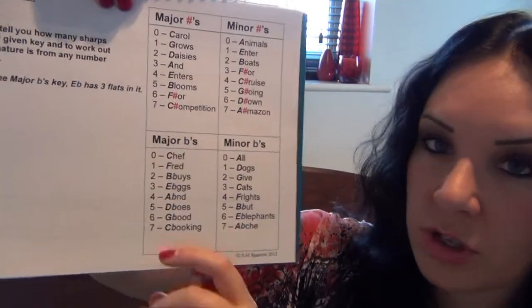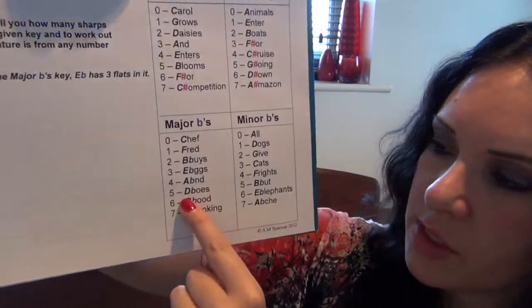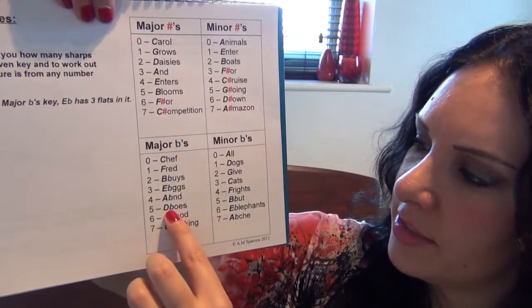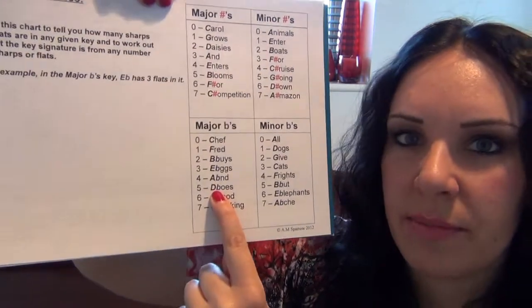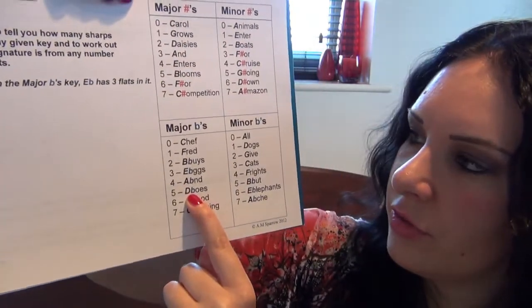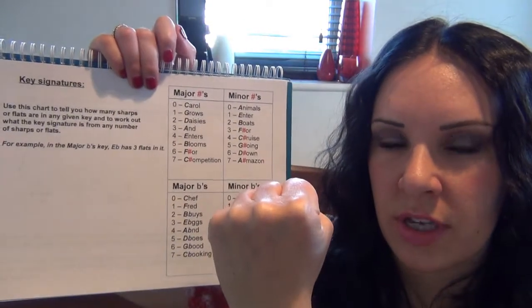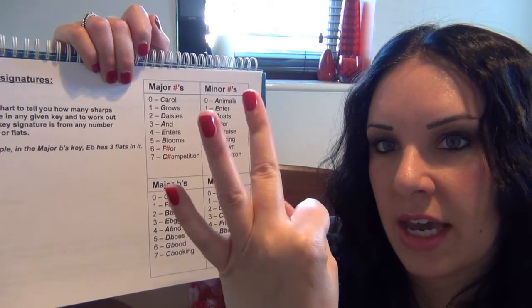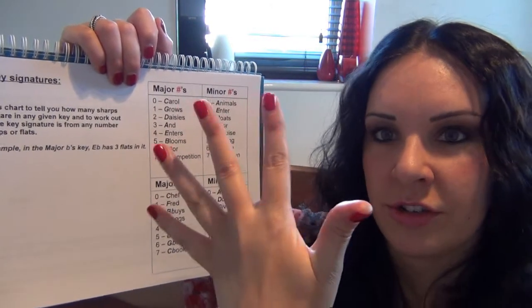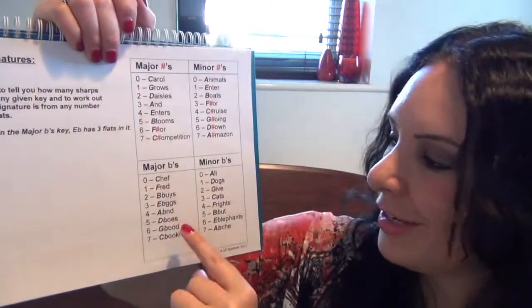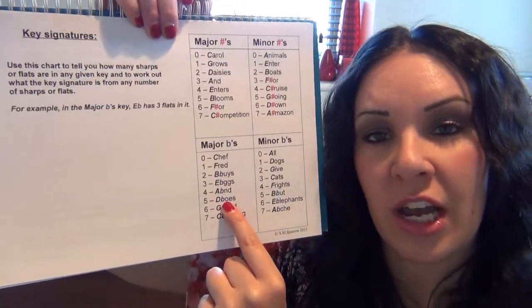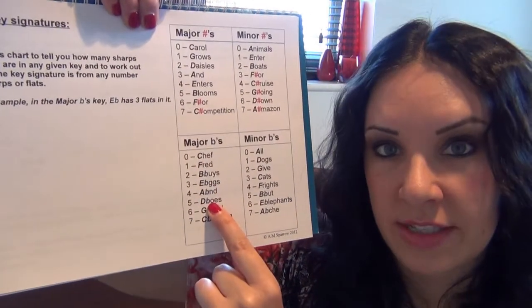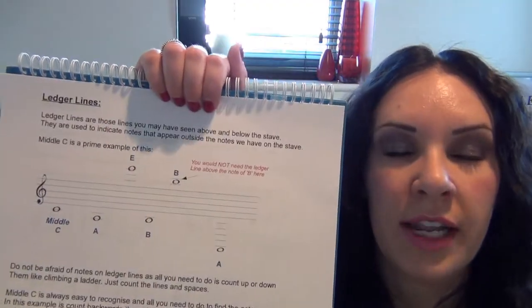The same is true for all of this. If someone asked you how many flats does D flat major have, you would use the rhymes and work out that D flat would have five flats in.